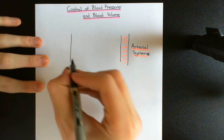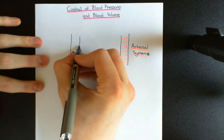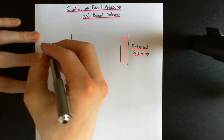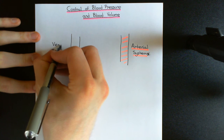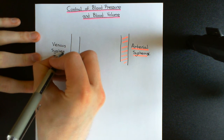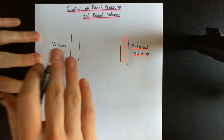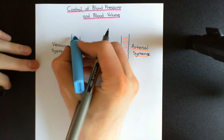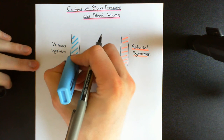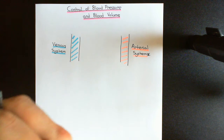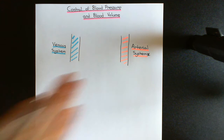We also need the venous system, which is the massive great veins — for instance, the superior and inferior vena cava and all the great big veins that drain into them. This tube over here is going to represent the venous system. Anatomically, of course, it's far more complicated than this, but as far as this very basic model is concerned, one great big tube performs the same role as an incredibly complicated network of tubes. I'll colour the venous system in blue.